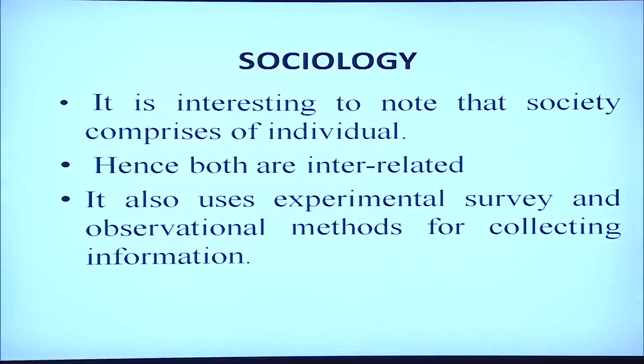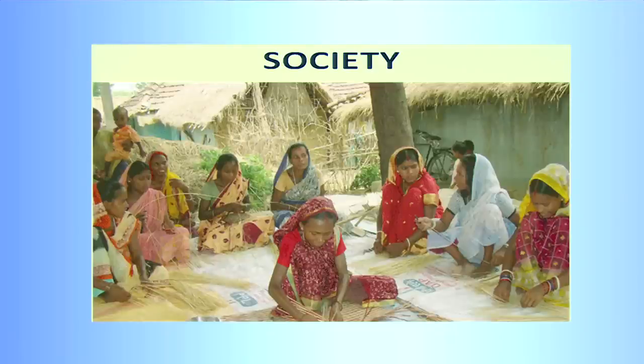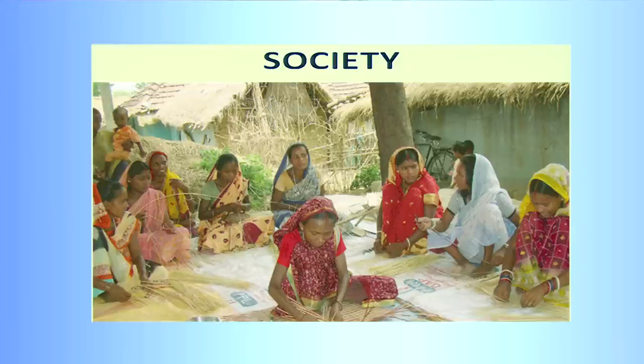Sociology also uses experimental, survey, and observational methods for collecting information, and psychology does so as well in collecting information about the human mind. A person from the background of sociology would try to understand a group as a whole, whereas a psychologist would try to understand each individual and their behavior within the group — but one way or another, both are trying to understand the behavior of people in society.